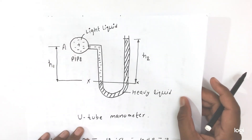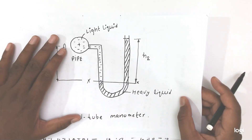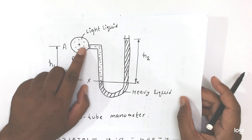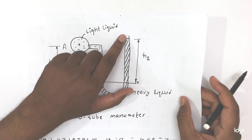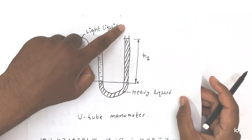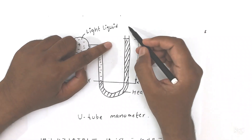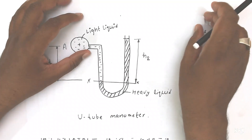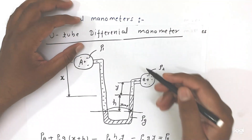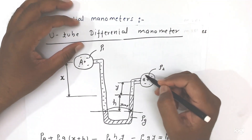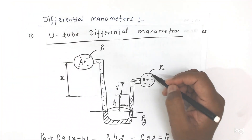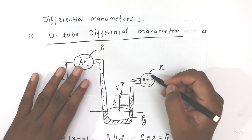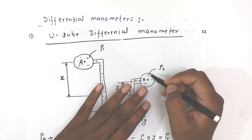This is the U-tube manometer — a simple U-tube manometer. In this, one end is connected to a pipe and the other end is free. If we connect the other end also to a pipe, it will become a differential manometer. So here, this other end is also connected to one pipe, so it will become a differential manometer and it will measure the difference in pressure between the two pipes.